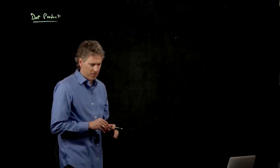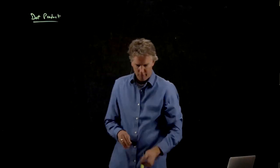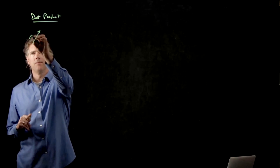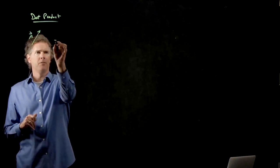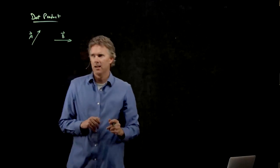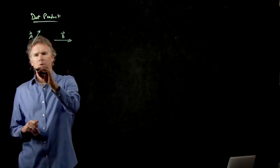The dot product is a mathematical tool for dealing with vectors. So if I have a vector A and I have some other vector B, and I want to calculate the dot product, how do I visualize it?